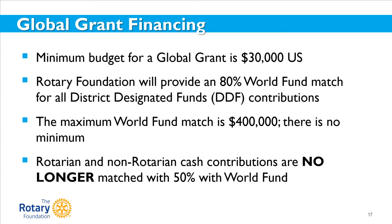As to global grant financing, the minimum total budget for a global grant is $30,000 US. With only a couple of exceptions, the grant must also include at least $15,000 US in matching funds from the Rotary Foundation. Clubs and districts can contribute using district-designated funds, which are matched 80% by the Foundation's World Fund. Please note that cash contributions such as outright gifts from Rotarians or funds from Rotary-led fundraisers are no longer matched by the Foundation. Additionally, non-Rotarian cash contributions from other organizations, businesses, or individuals are also no longer being matched.